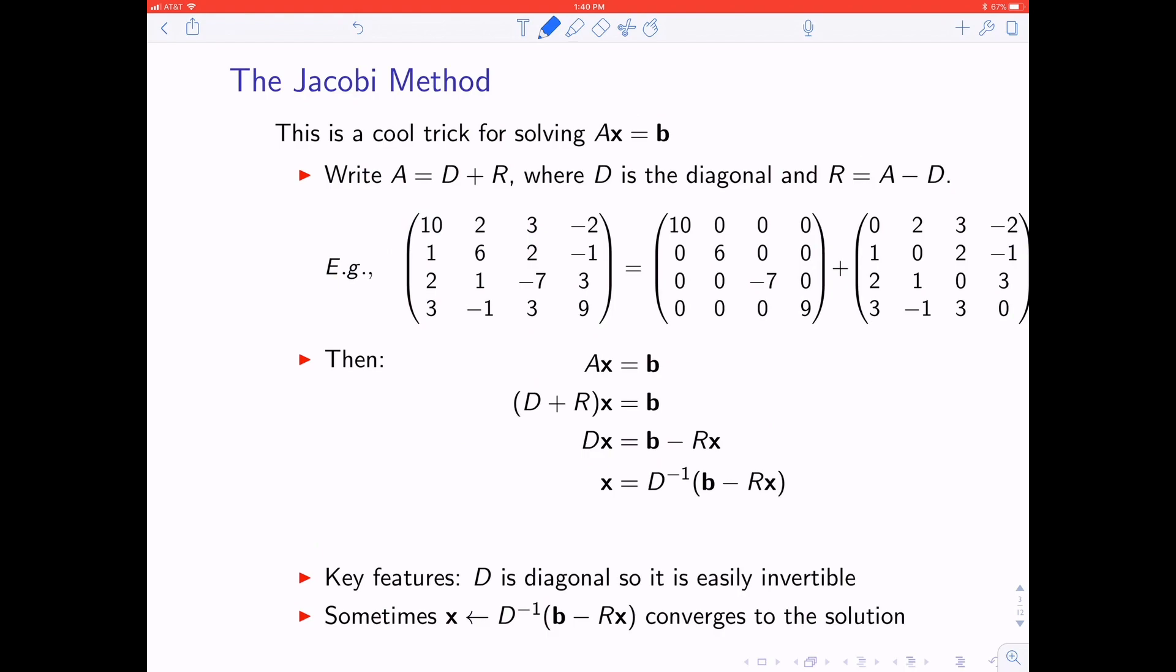You're going to learn now an iterative method for solving AX equals B. This is called the Jacobi method, and it depends on a really simple observation, which is that you can take a matrix A and just break it up into the sum of two things: something that's non-zero only on the diagonal and then everything else. So D holds the diagonal elements of A, R holds all the non-diagonal elements.